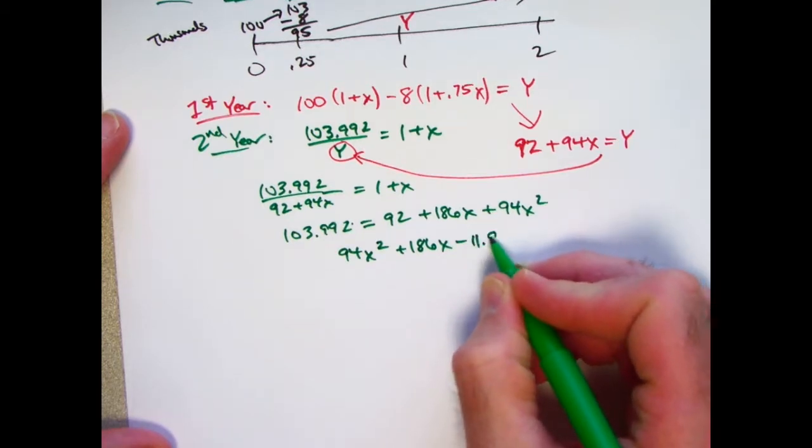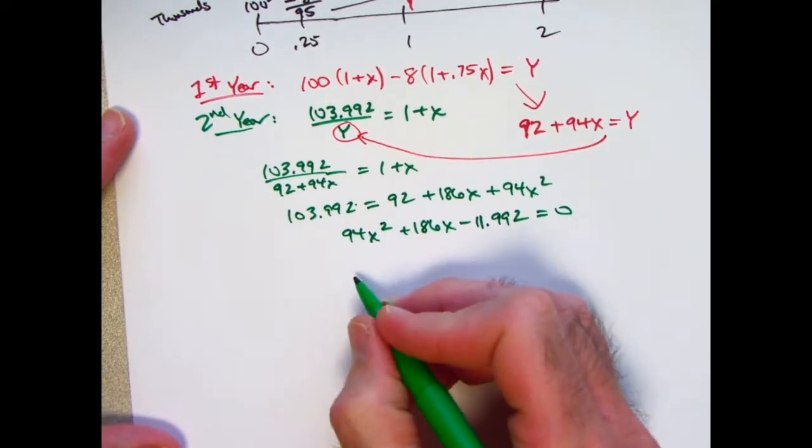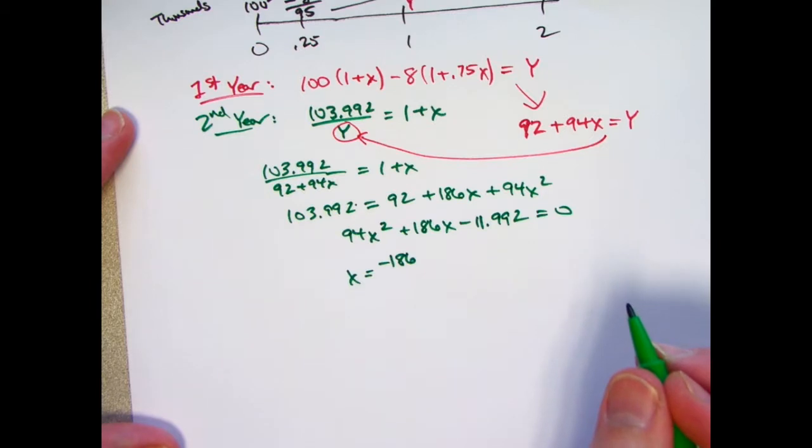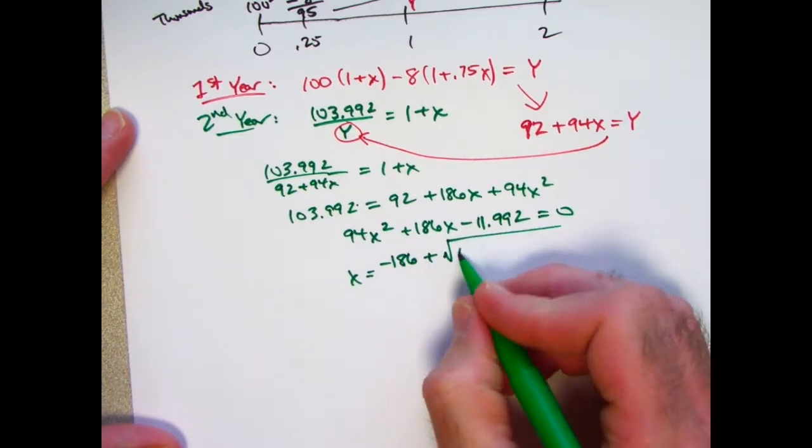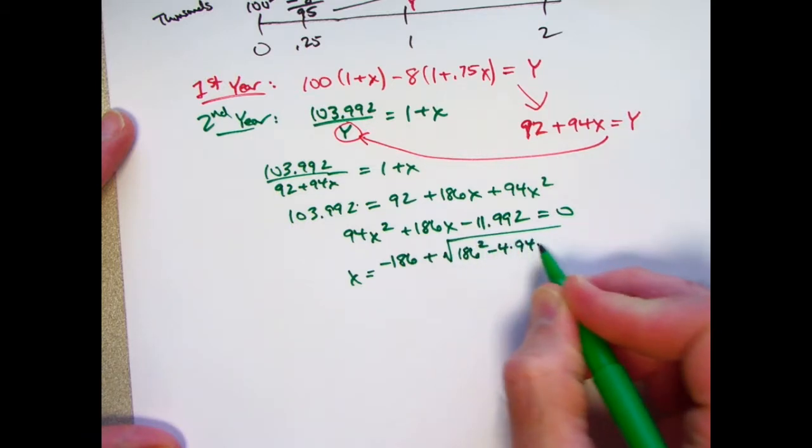Now use the quadratic formula and evidently take the positive square root. Because in all likelihood x is going to be positive here. So we'd have the square root of 186 squared. Minus 4 times 94 times, careful, negative 11.992.